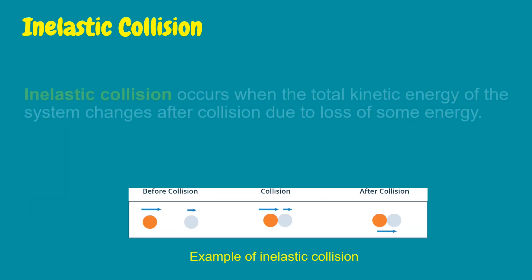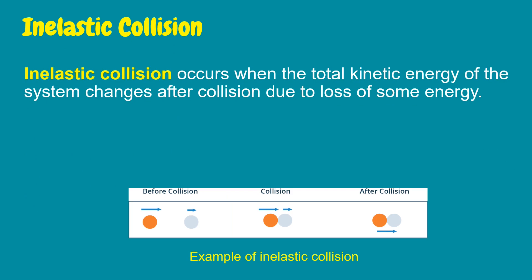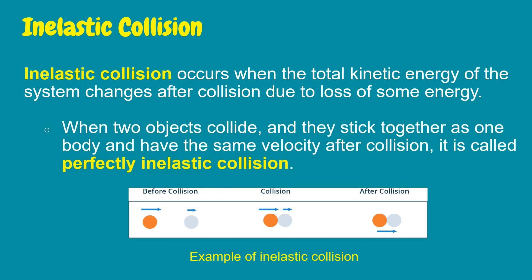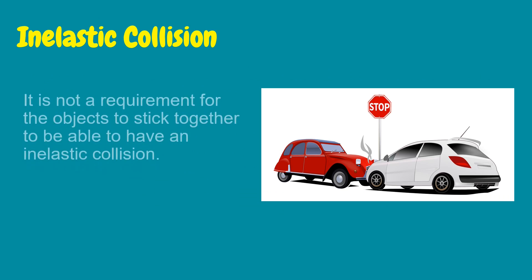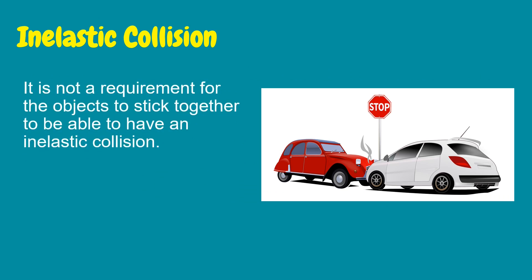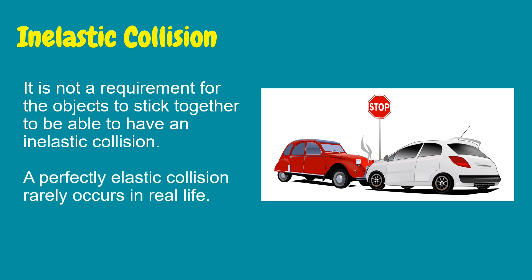On the other hand, inelastic collision occurs when the total kinetic energy of the system changes after collision due to loss of some energy. When two objects collide and stick together as one body with the same velocity after collision, it is called a perfectly inelastic collision. It is not a requirement for the objects to stick together to have an inelastic collision. A perfectly elastic collision rarely occurs in real life because most collisions are inelastic.